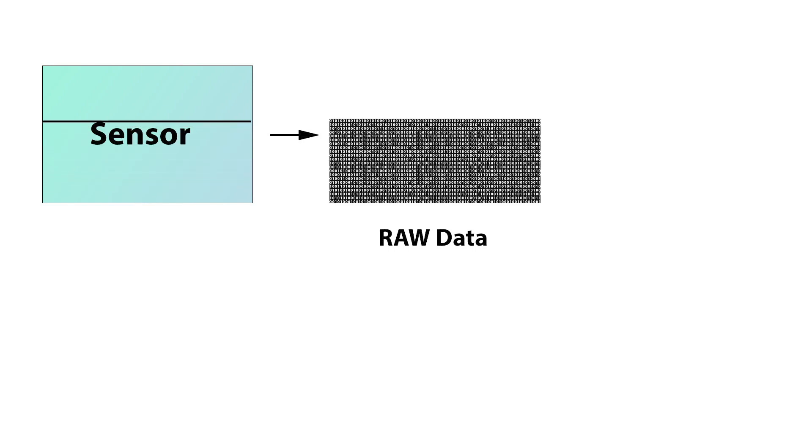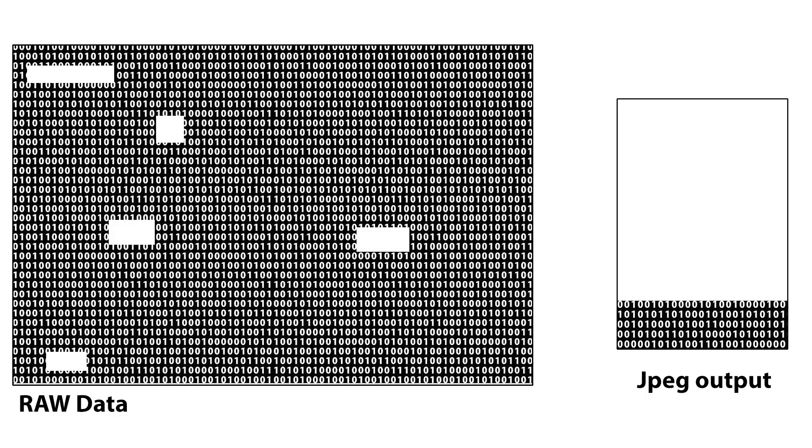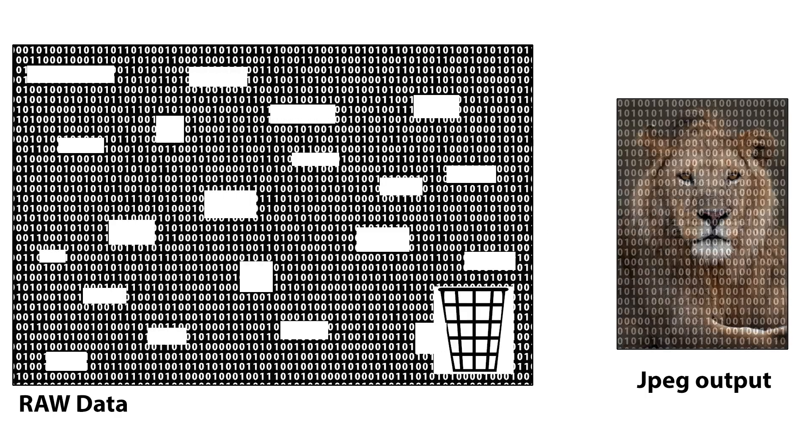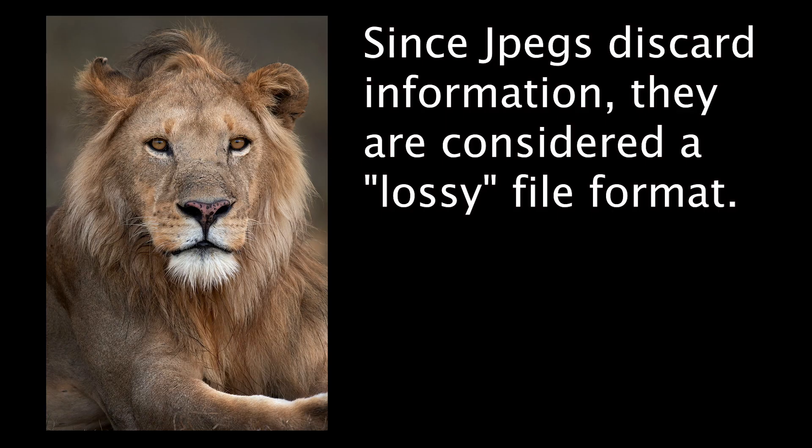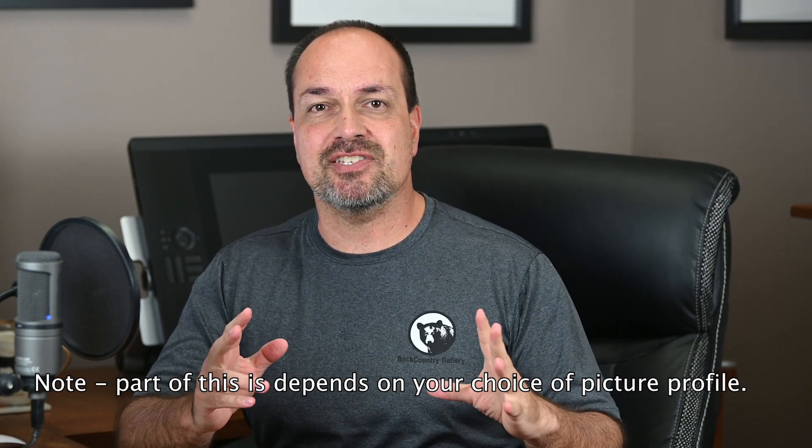Here's the trick: the camera always starts with a raw file, even if you're shooting JPEG. To create an 8-bit JPEG, the camera's JPEG engine needs to decide what data to save and what to discard from the raw file, since the JPEG can't hold all the data. The JPEG is produced based on two things: your settings like exposure and white balance, and how the camera's JPEG engine interprets the data from the scene. It does this assuming you're not going to want to adjust things like highlights, shadows, or white balance later. The JPEG engine then creates one possible version of the image, and the rest of the raw data is discarded.